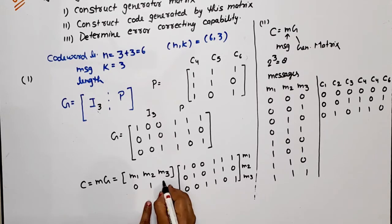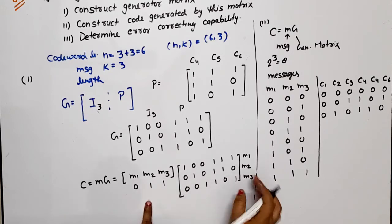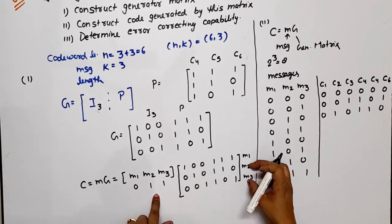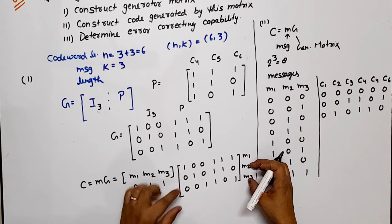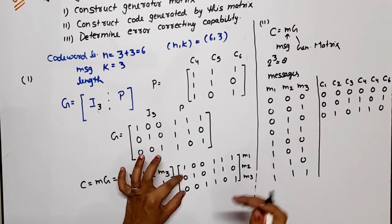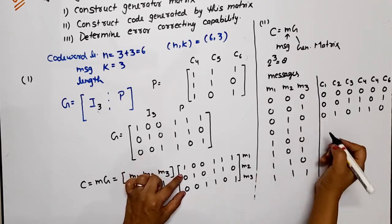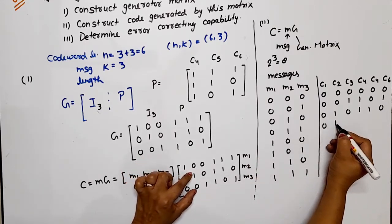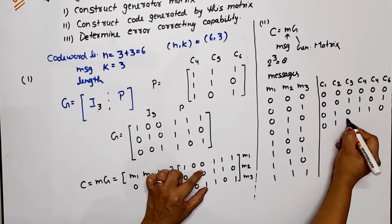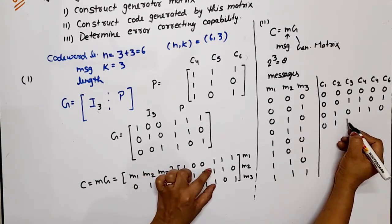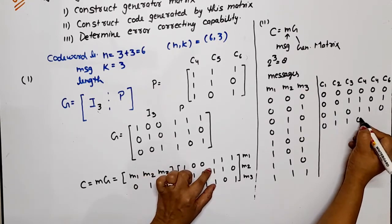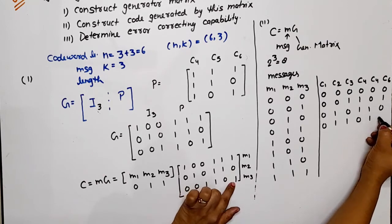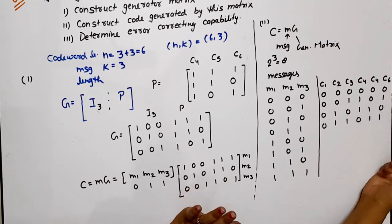For message 011, M2 and M3 are both available, so we take the last two rows and XOR them. We get: 0 XOR 0 = 0, 1 XOR 1 = 0 wait — combining: 011, then parity bits 1 XOR 1 = 0, 1 XOR 0 = 1, 0 XOR 1 = 1. So code word is 011011.